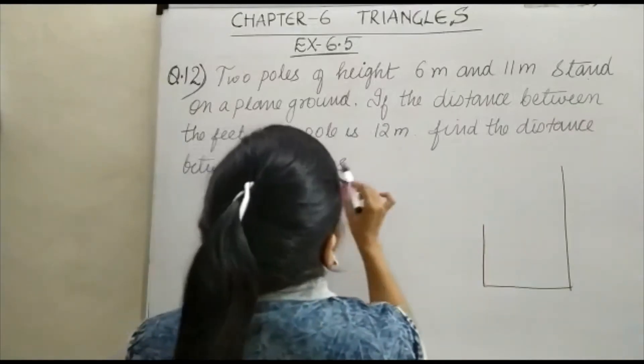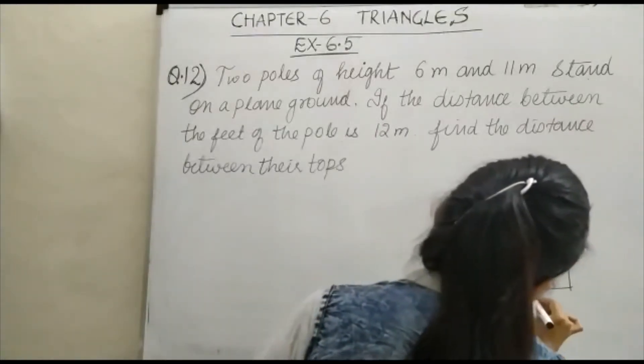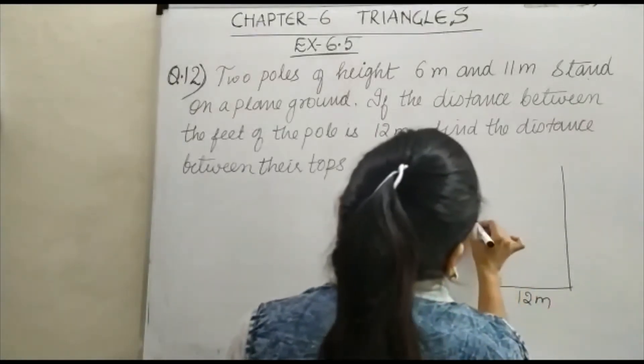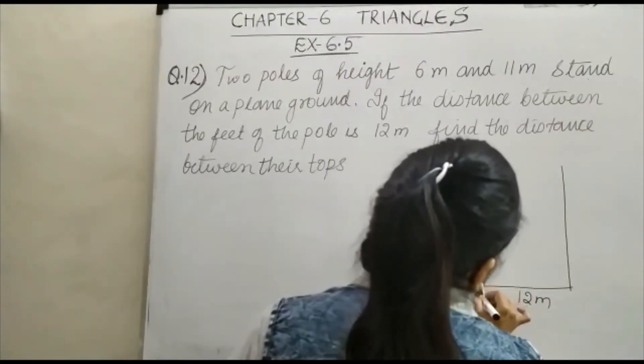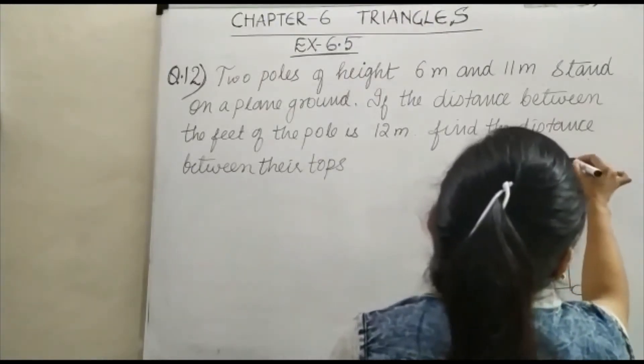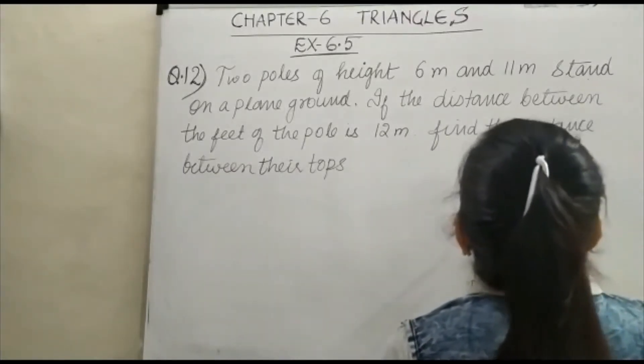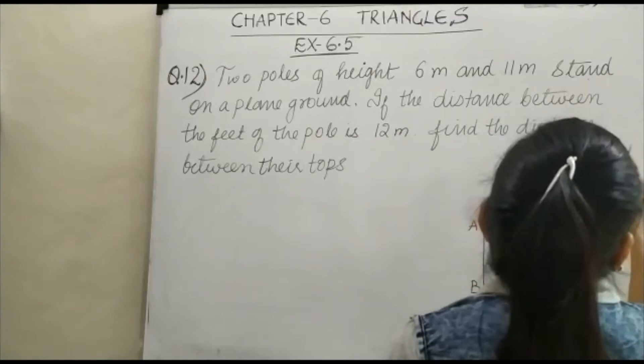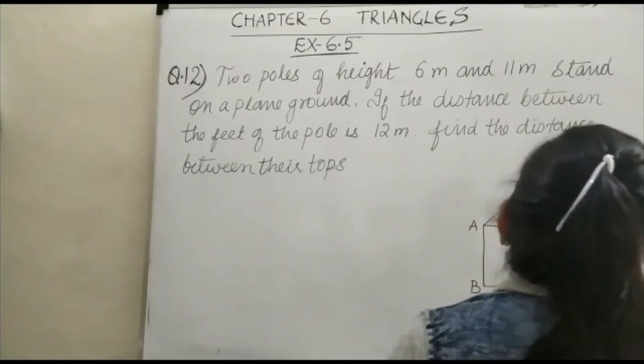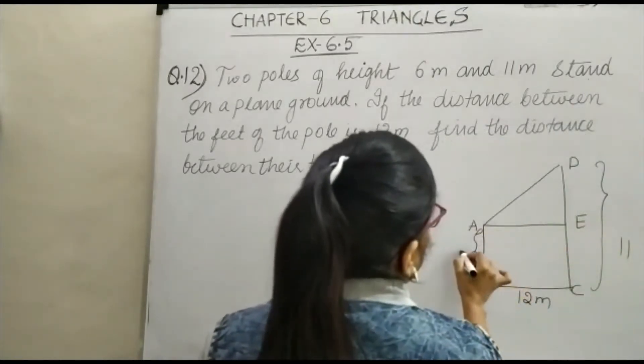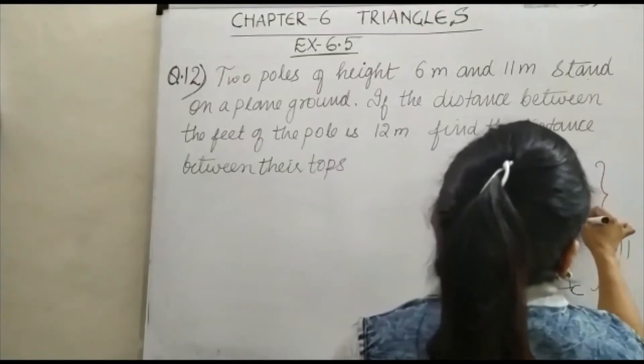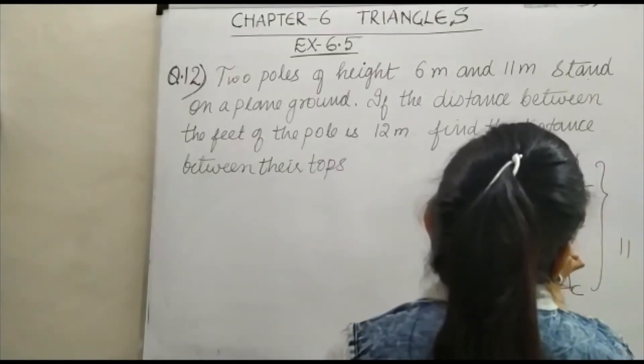If the distance between the feet of the poles is 12 meter, they are 12 meter apart. You have labeling A, B, C, D. This is your 11, this is your 6, and this will be your 5. You have 12.